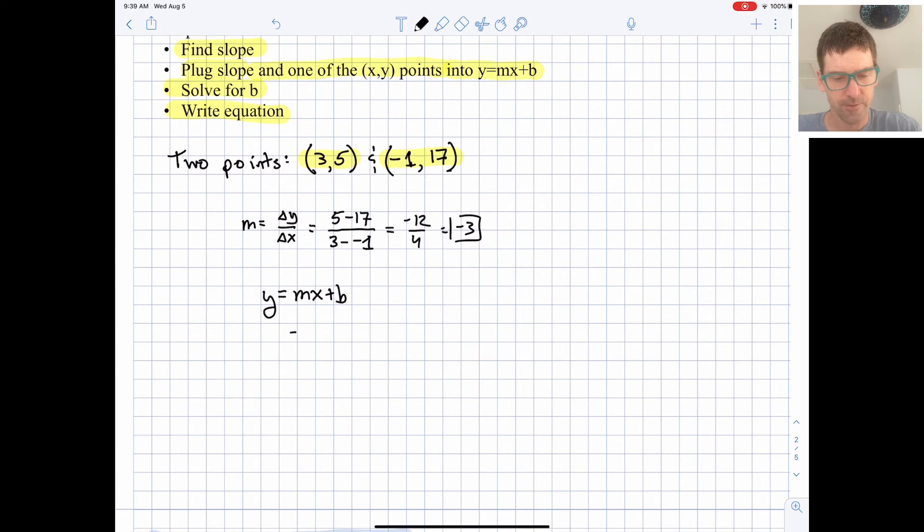We know that m is negative 3, we don't know b yet, and let's plug in x and y. Here's another common mistake. In my equation here, y comes first, but in the coordinate ordered pair, x comes first. So you want to make sure that you're remembering that here x is 3 and y is 5. So we have 5 equals negative 3 times the 3 plus b.